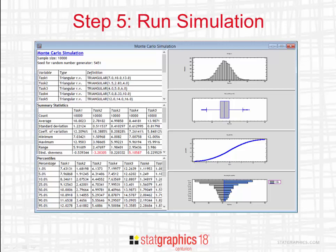You see, for example, the analysis summary, summary statistics for each of my X and Y variables, and percentiles for each of my X and Y variables. You also see on the right-hand side a histogram, a box and whisker plot, a quantile plot, and a sensitivity tornado plot.